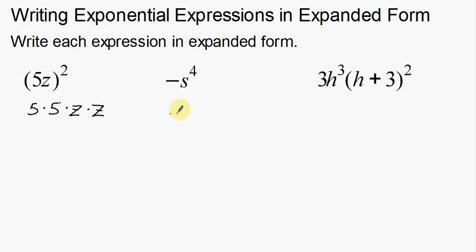Now notice here that we don't have any parenthesis for this one, which is okay. That tells me I have a negative out front, but the s is being taken to the fourth power—not the negative. The negative is not being taken to the fourth, just the s. So I have one negative, but then I have four s's. That would be the expanded form of this expression.